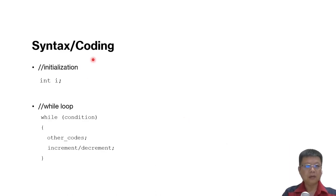The syntax is also quite straightforward. We have int i which is the initialization part, and then we have the while loop with its condition, and then the other code, and the increment part or the decrement part. So basically, they share the same concept with for loop.